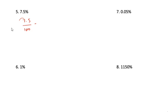Next one: 7.5 percent, which is 7.5 divided by 100. There are 2 places. One decimal place is already there, so for 2 places you have to add a 0 here. The answer is 0.075.